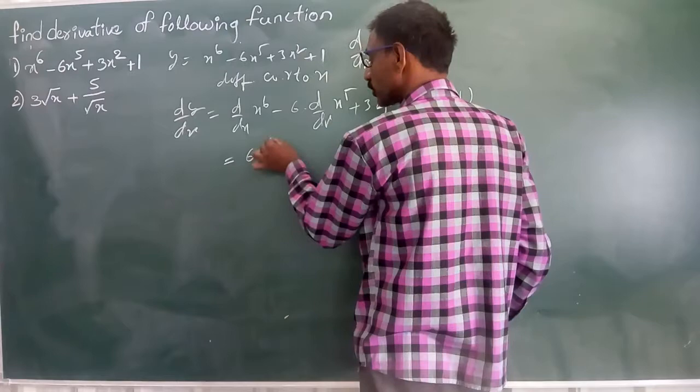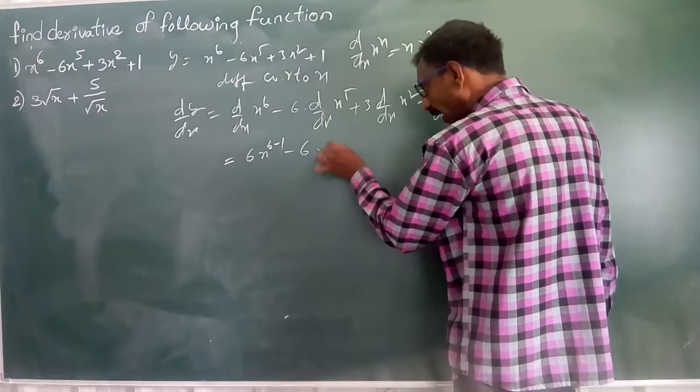We can write 6 into x to the power of 6 minus 1, minus 6 into 5 into x to the power of 5 minus 1.